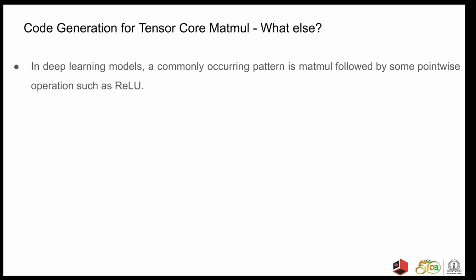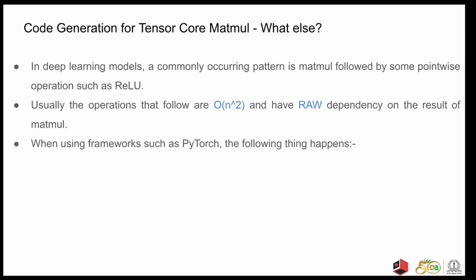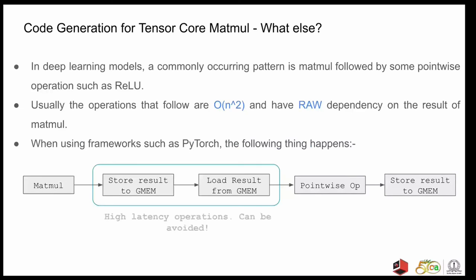Apart from MatMul, another commonly occurring pattern in deep learning models is MatMul followed by some point-wise operations such as ReLU. Usually, the operations that follow are order of N square and have a read-after-write dependency on the result of MatMul. When using frameworks such as PyTorch without any other libraries, the following thing happens. You perform the MatMul, store the result back to the global memory, then again load the result back from global memory into the registers, do the point-wise operations, and you may again store it back to the global memory. The store and load in between are the high-latency operations and can be avoided by doing operator fusion of the point-wise op with matrix-matrix multiplication. Operator fusion essentially consumes the result of the MatMul when they are fresh in the registers, applies the point-wise op, and then just stores the result back to global memory once.